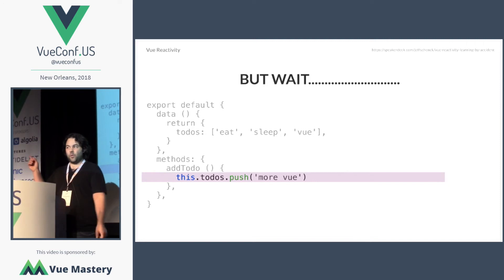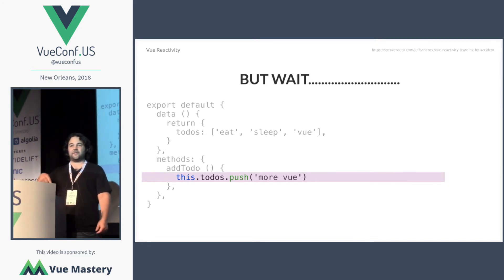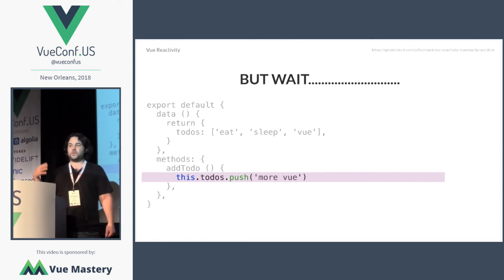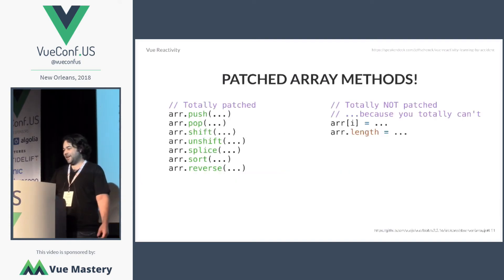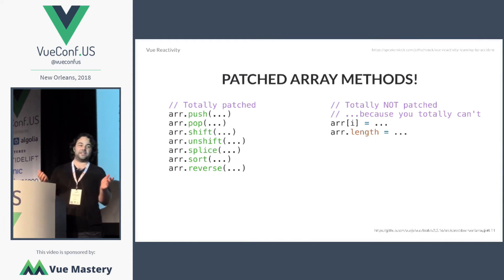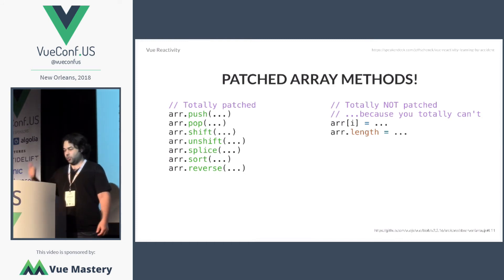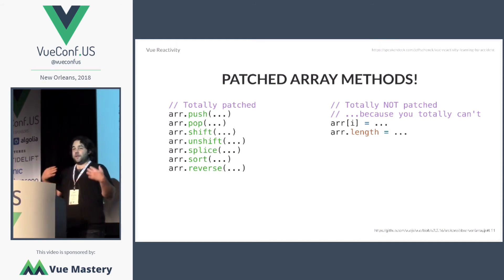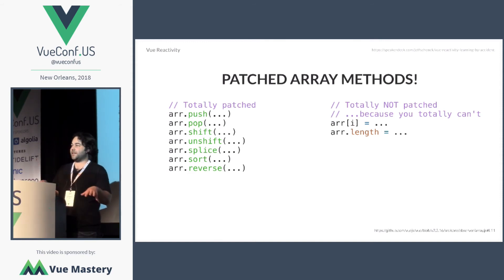It doesn't happen automatically for arrays. But wait — didn't todos.push work? That doesn't have getters and setters. We modified the array but it was still reactive. Once again, thanks to Vue, because they've done some work for us. Vue has actually patched our array methods. If it's part of that reactivity tree, push, pop, shift, unshift, splice, sort, and reverse are patched for you, notifying all of the dependencies.